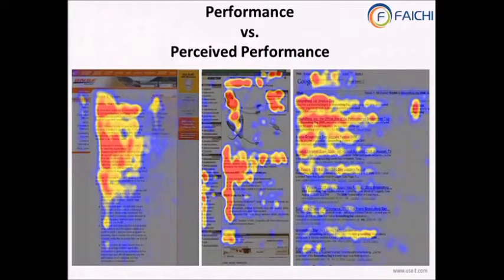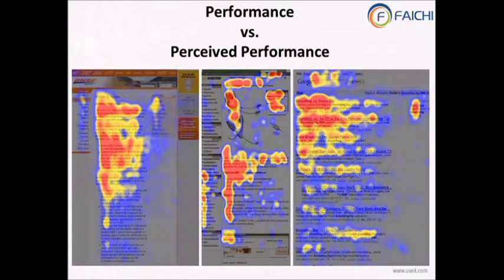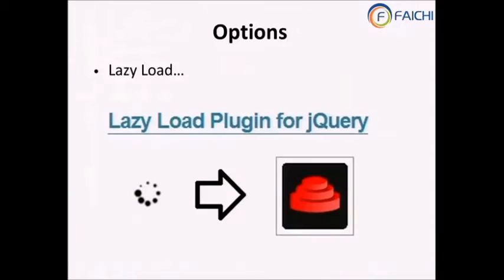All backend and frontend optimization boils down to one conclusion: which part of the page users are clicking on, and what they actually want to see first. If that loads first and the rest is still loading, they don't care. That's what Facebook did — that's where the technology of BigPipe came from. But before BigPipe, there was lazy load.